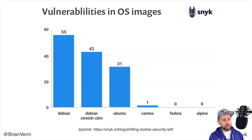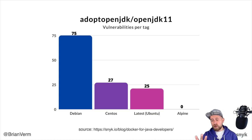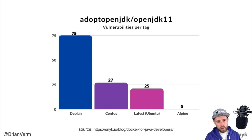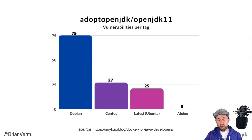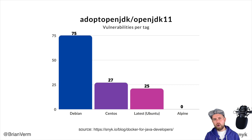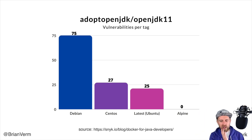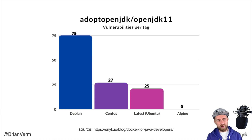Looking at Java images specifically — different flavors of the AdoptOpenJDK image have very different vulnerability counts. The latest OpenJDK 11 based on Ubuntu has 25 vulnerabilities, while the Debian-based one has 75 — all from binaries that ship automatically with that OS layer. Ask yourself: do you actually need a full-blown operating system? Picking the right foundation is essential for a secure Docker image.